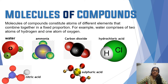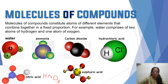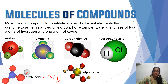Now let's look at nitric acid. The formula of nitric acid is HNO3. Here you can see the hydrogen atom, the nitrogen atom, and three oxygen atoms. So this is one molecule of nitric acid. One molecule of nitric acid contains one hydrogen atom, one nitrogen atom, and three oxygen atoms.